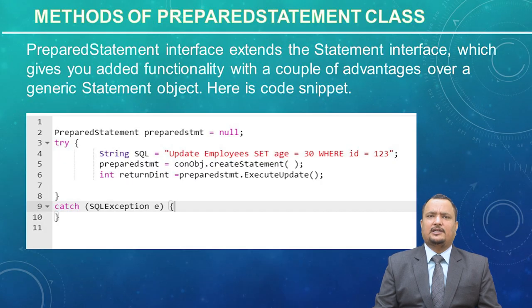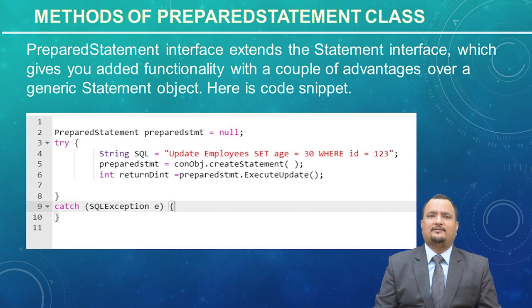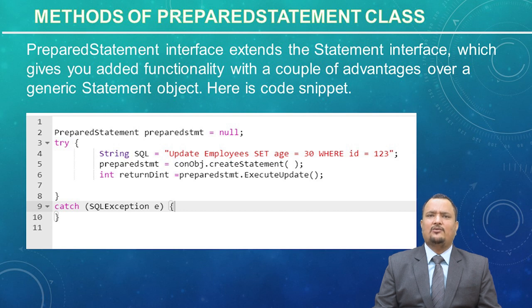Next is the Prepared Statement object. The Prepared Statement interface extends the Statement interface, giving you added functionality with advantages over a generic statement object. This statement gives you the flexibility of supplying arguments dynamically. Declaring a PreparedStatement variable initially as null, in the try block we take a string SQL with an update query — update implies set equals something and where id equals something. Then preparedStatement = conn.prepareStatement(SQL); creates the object of prepared statement.